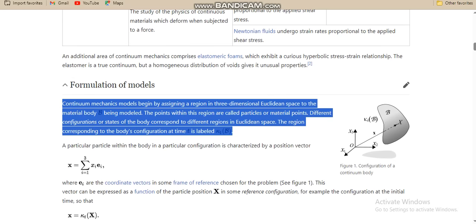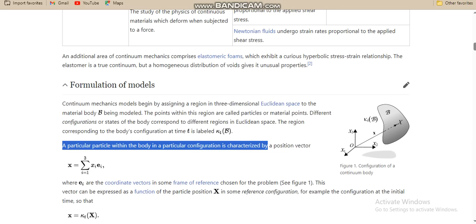Assigning origin in three-dimensional space to a material body at a point. A particular particle has a particular configuration, which is characterized by the position vector X.